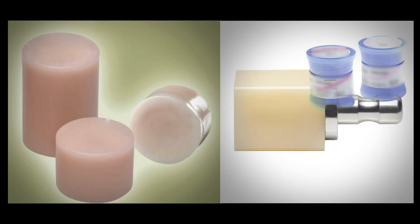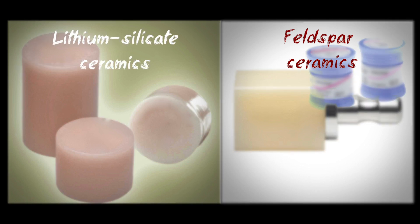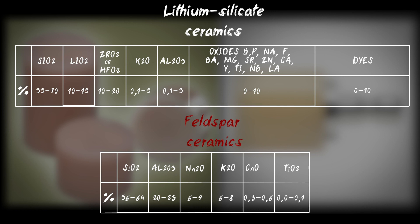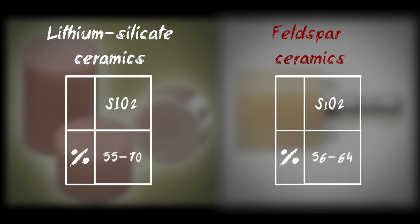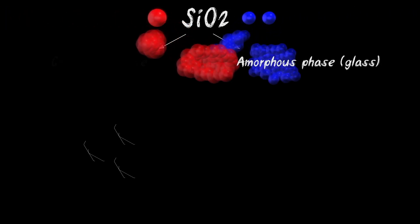Consider the two most common glass ceramics, feldspar and lithium silicate. Here is composition. Despite the fact that the biggest part is silicon oxide and its amount is approximately the same, there is a huge difference in the properties. And it is related to the phase in which silicon oxide will be – amorphous, glass phase or crystalline.